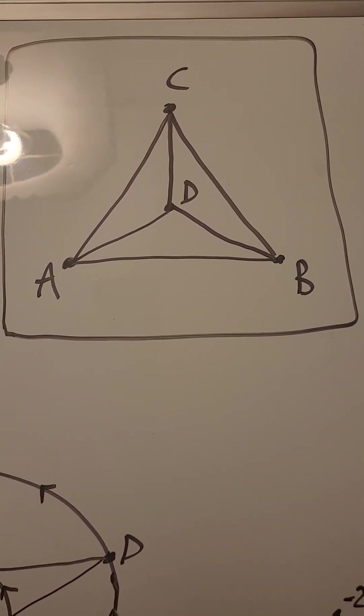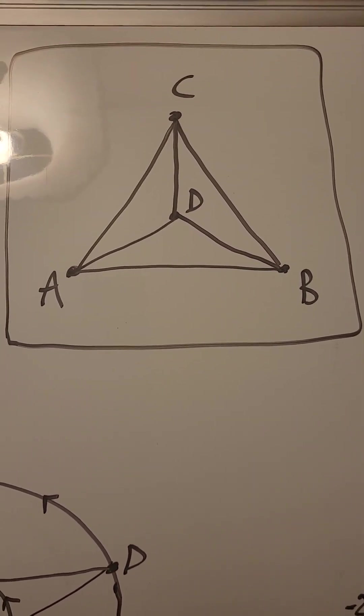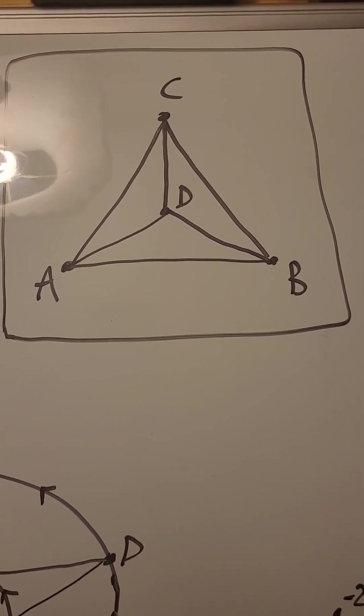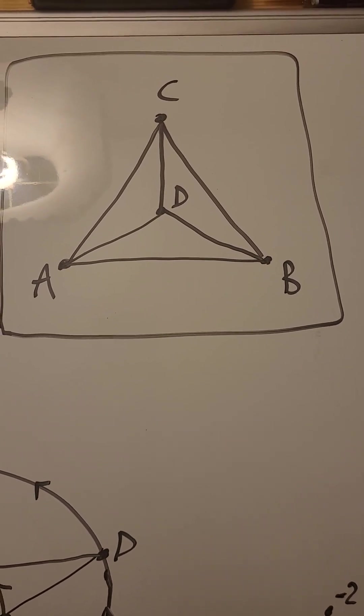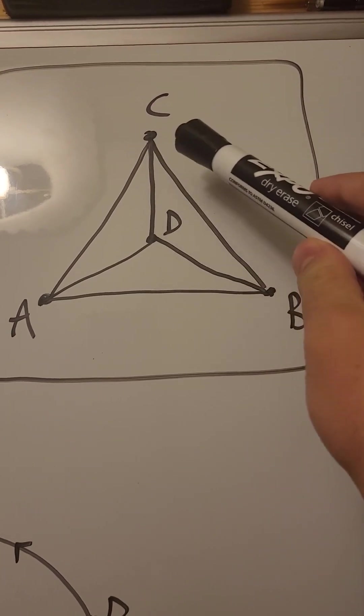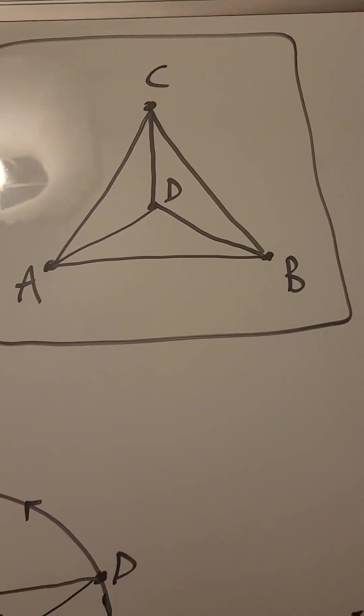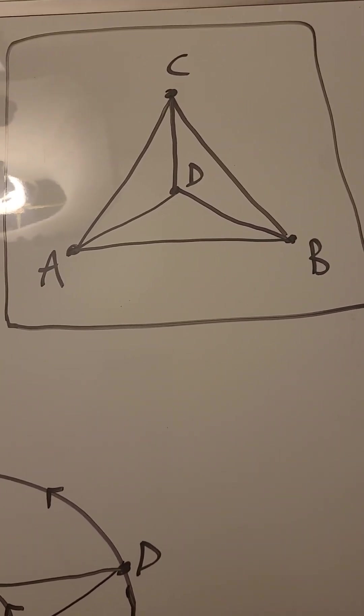What you see pictured here is how to embed the complete graph of four vertices onto the surface of a plane. It's called the complete graph of four vertices because we have four vertices labeled ABCD and we have an edge between any pair of distinct vertices. No edge overlaps the other and thus it's considered an embedding onto the plane.